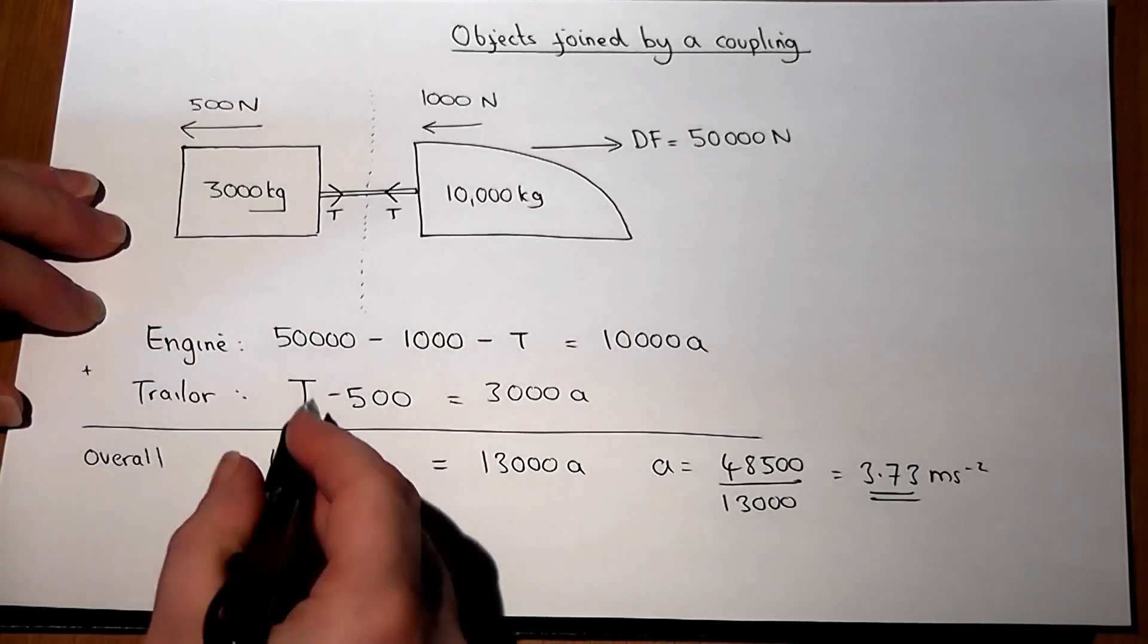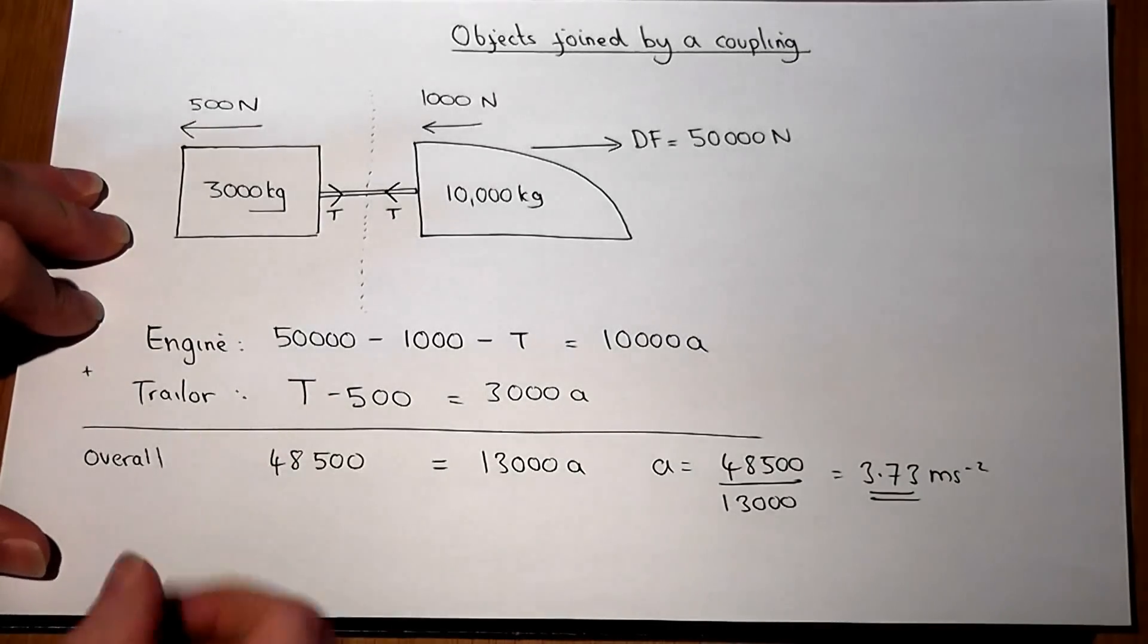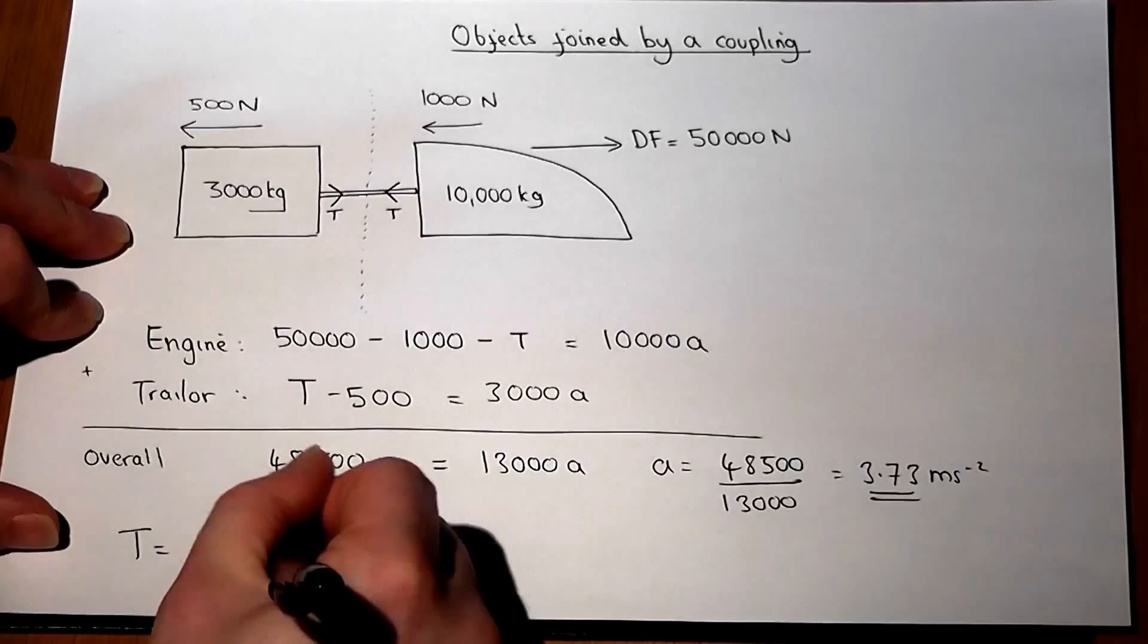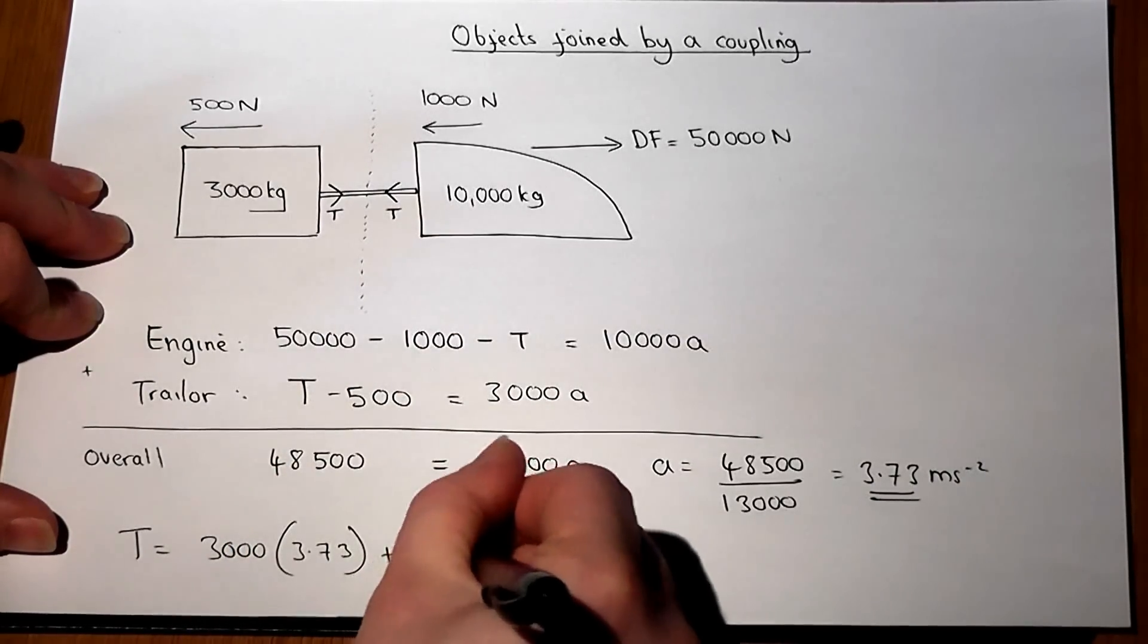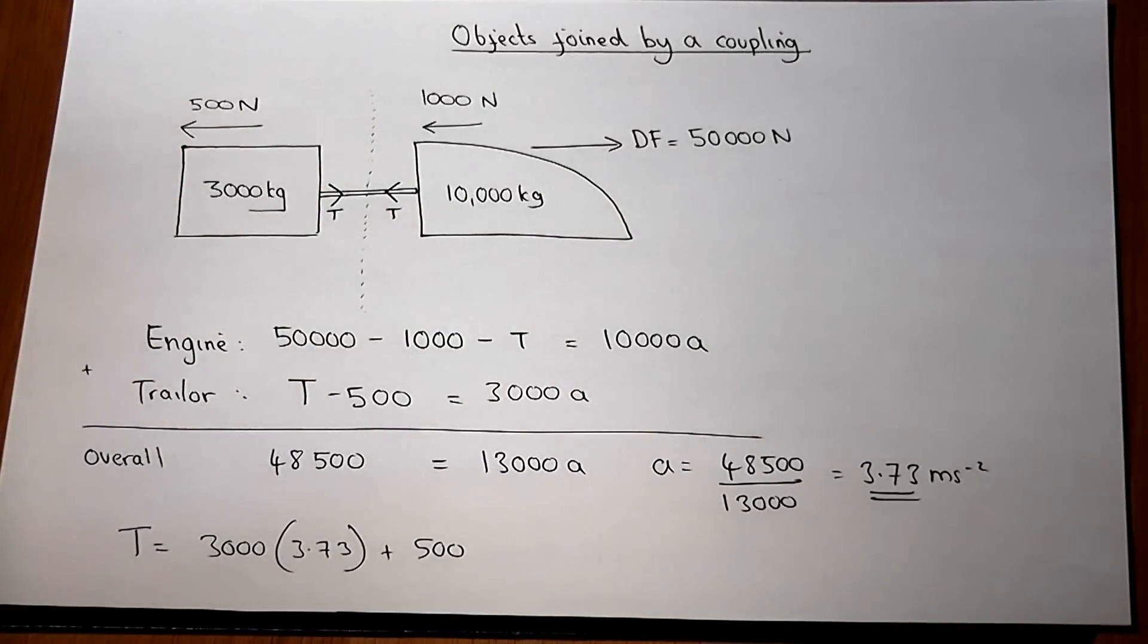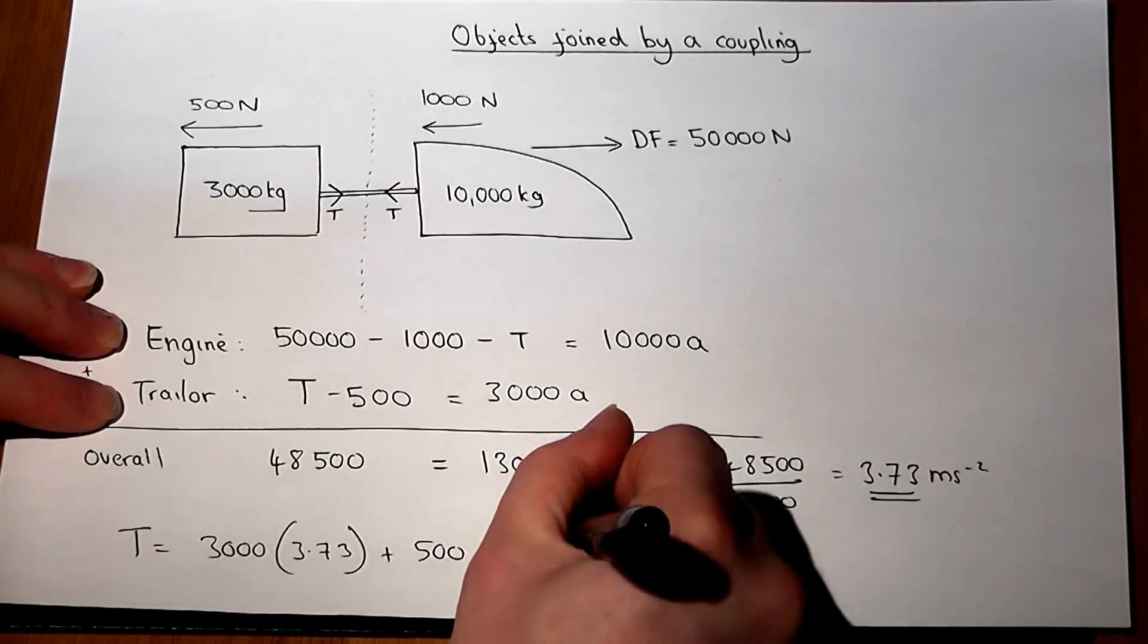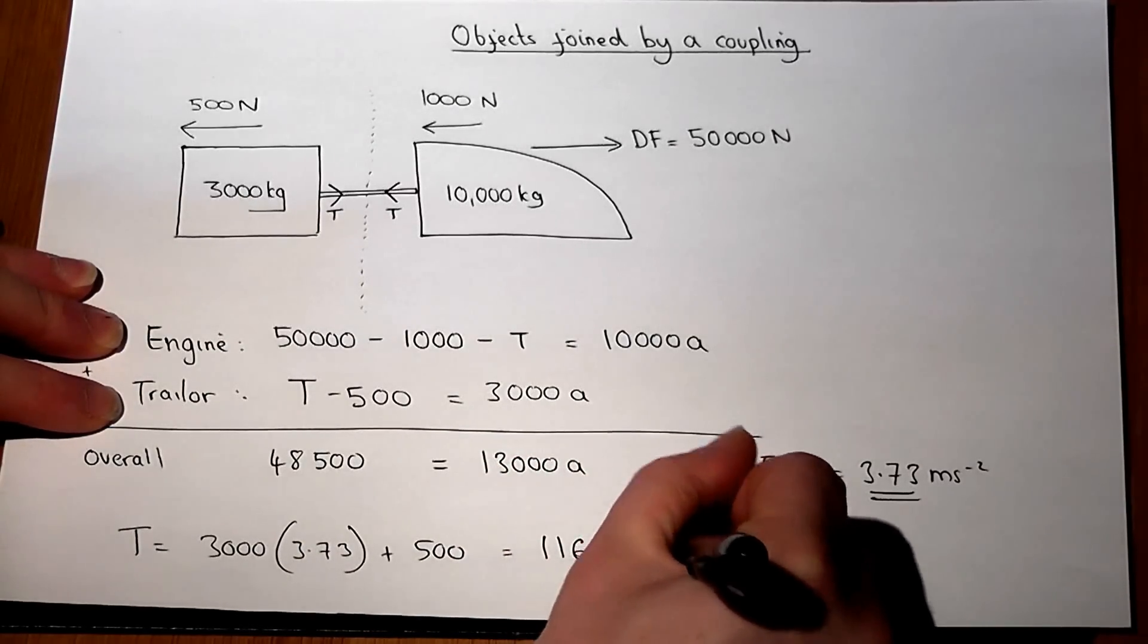Now to find the tension, I now pick either equation, for example the second one. So T must equal 3,000 times A plus the 500. So we work this out, and the tension in the tow bar is equal to a whopping 11,692 newtons.